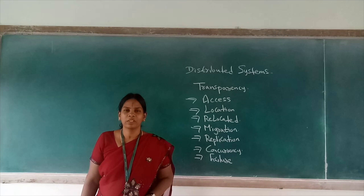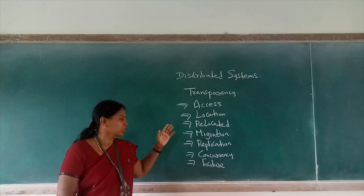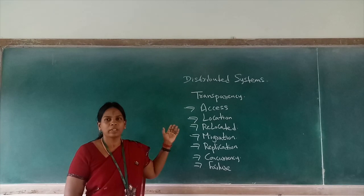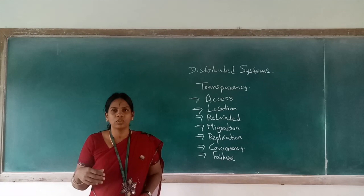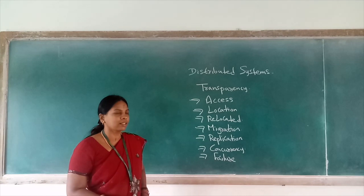So various transparencies we can talk about are access, location, relocation, migration, replication, concurrency, and failure. Here we are talking about transparency in terms of when a process is going to access some resource, or a resource is going to be provided by a required process.